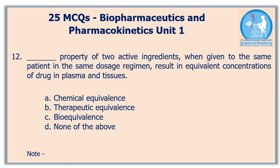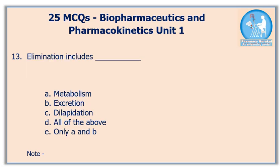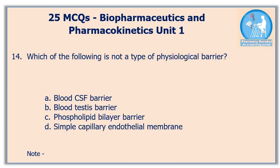Question twelve: dash property of two active ingredients when given to the same patient in the same dosage regimen results in equivalent concentrations of the drug in plasma and tissues — the correct answer is option C, bioequivalence. Question number thirteen: elimination includes — the correct answer is option E, elimination includes metabolism and excretion.